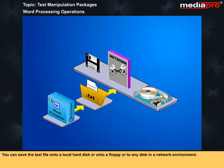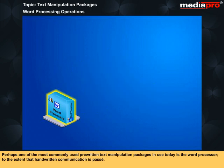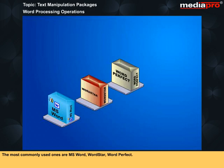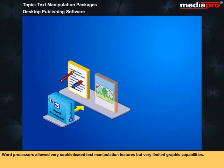You can save the text file onto a local hard disk, or onto a floppy, or to any disk in a network environment. Perhaps one of the most commonly used pre-written text manipulation packages in use today is the word processor, to the extent that handwritten communication is passé. The most commonly used ones are MS Word, WordStar, and WordPerfect. Word processors allow very sophisticated text manipulation features, but very limited graphic capabilities.